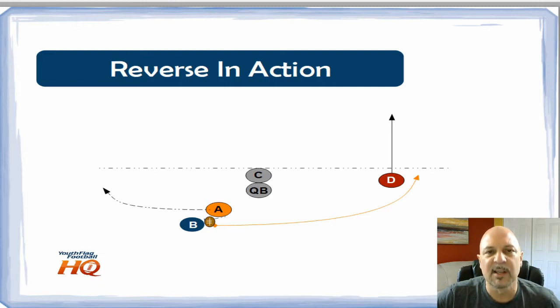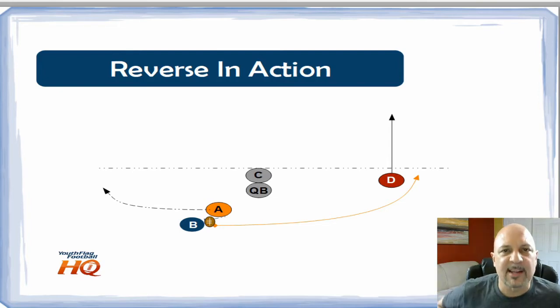B will accept the handoff and sweep all the way around heading towards the sideline in the opposite direction. One note: you have to understand your rules for your league. If you play by NFL flag rules, you cannot pitch the ball, you must hand the ball off. If you play by other rules where you can pitch the ball, then it makes the play slightly easier, although pitches can be a little more risky. The quarterback can pitch to A and A can pitch to B, which allows B to gain more depth.